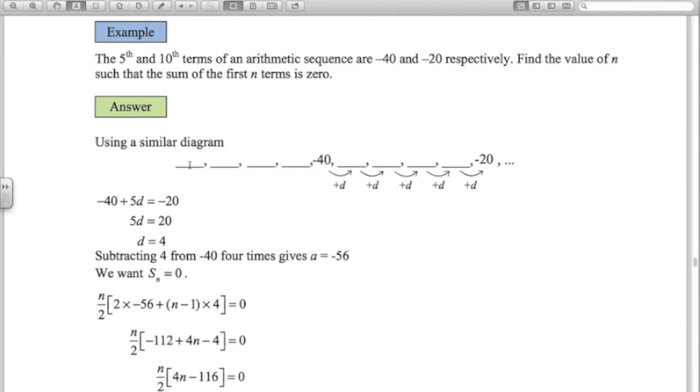So I've added 4 on each time from this one here: 1, 2, 3, 4 times to get to negative 40. So that means I must have started at negative 56. So A is negative 56, D is 4. We want the sum of N terms being 0.